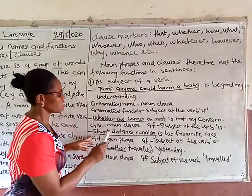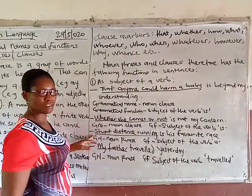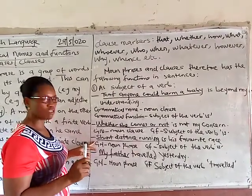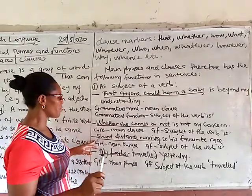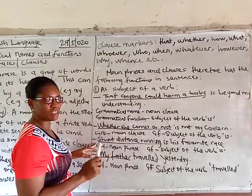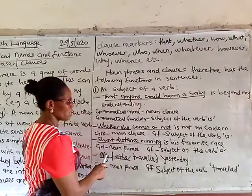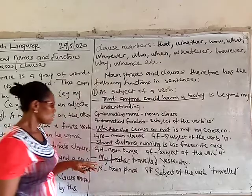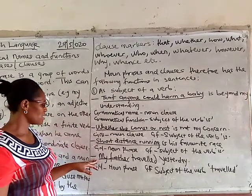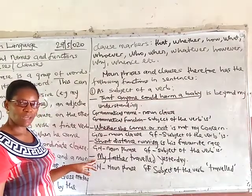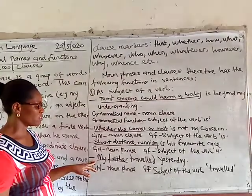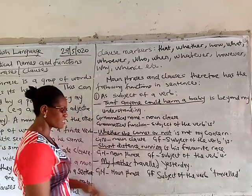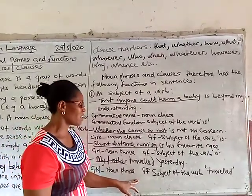'Short distance running is his favourite race.' Here there is no clause marker, so it is a noun phrase. 'Short distance running' is the grammatical name — noun phrase — and the grammatical function is still subject of the verb 'is'. Similarly, 'my father travelled yesterday' — 'my father' is a noun phrase with no clause marker. The grammatical name is noun phrase; the grammatical function is subject of the verb 'travelled'.